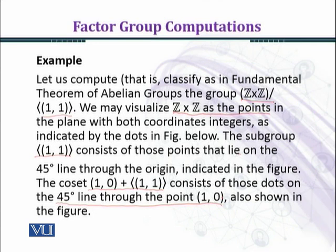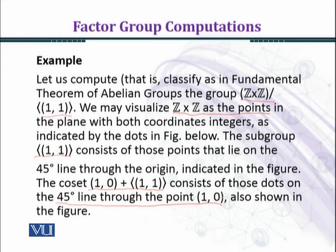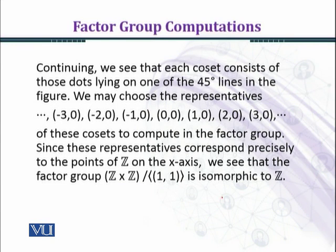Since Z cross Z is an additive group, the identity element corresponds to the line through the origin. The subgroup H is the line passing through the origin in Z cross Z. The cosets (1,0) plus H, (2,0) plus H, (3,0) plus H are lines below, and minus one (0) plus H, minus two (0) plus H, minus three (0) plus H are lines above H.